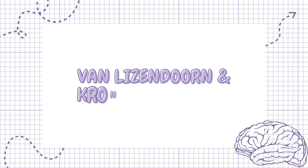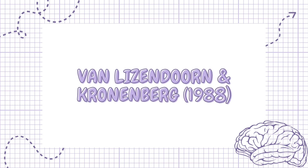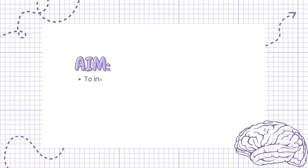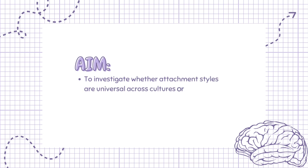Van IJzendoorn and Kroonenberg (1988) aimed to investigate whether attachment styles are universal across cultures or whether cultural conditions affect attachment styles.